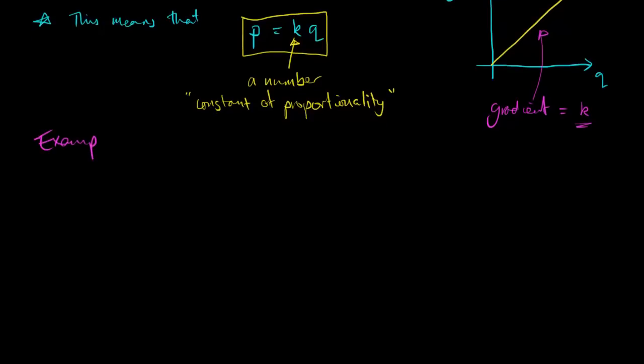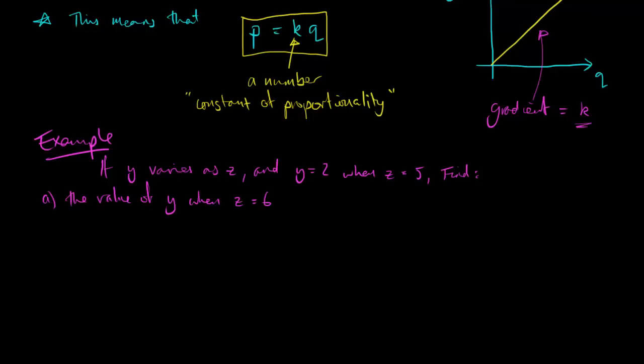Now let's just look at how we solve questions on this. They all basically follow the same sort of pattern, what you're asked to do and how you do it. So I'm going to lay out the steps for you using this example. So, the example is, if y varies as z, we'll come back to that terminology in a minute, and y equals 2 when z equals 5, we want to find the following. A, the first thing to find is the value of y when z is equal to 6. And we also need to find the value of z when y has the value 5.